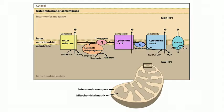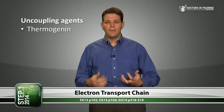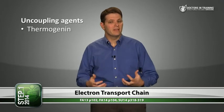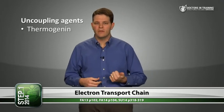Another way to disrupt the electron transport chain is to use an uncoupling agent. An uncoupling agent uncouples the electron transport chain from the ATPase by increasing the permeability of the inner mitochondrial membrane to hydrogen ions. If hydrogen ions leak back into the mitochondrial matrix without going through an ATPase, that potential energy is wasted as heat. There's a substance called thermogenin in brown fat that hibernating animals use to generate more heat in the winter — they need that energy as heat rather than ATP during hibernation.